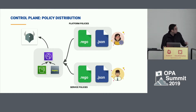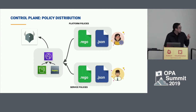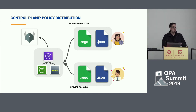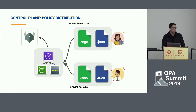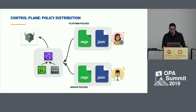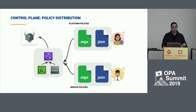We actually have two sets of policies: platform policies and service policies. The platform policies define things we want across the entire platform or a particular segment — basically a base layer of rules so that every service gets some baseline policies applied to them. Then service owners — the people that build and deploy the services — can write their own rules and data for those policies.